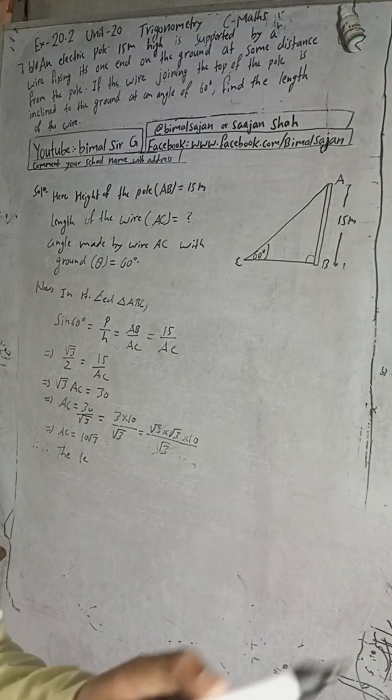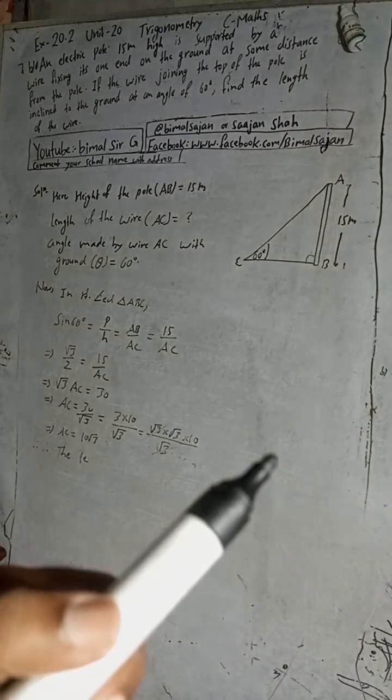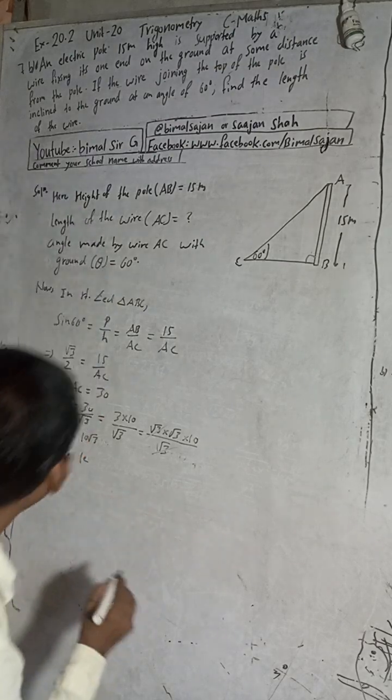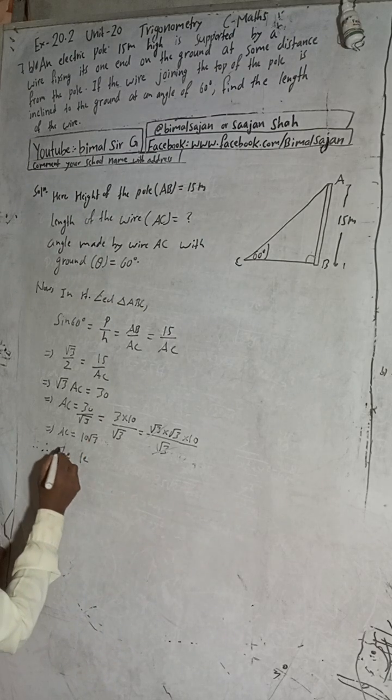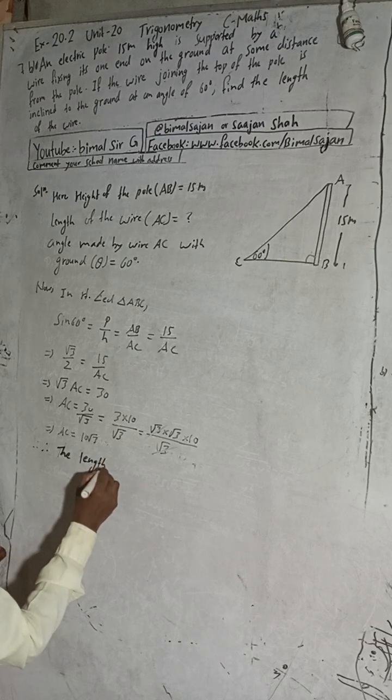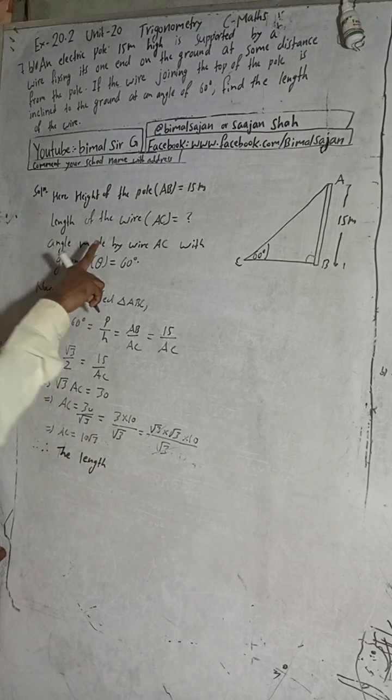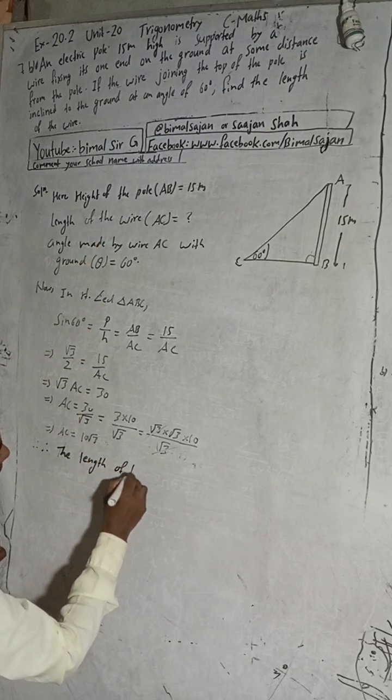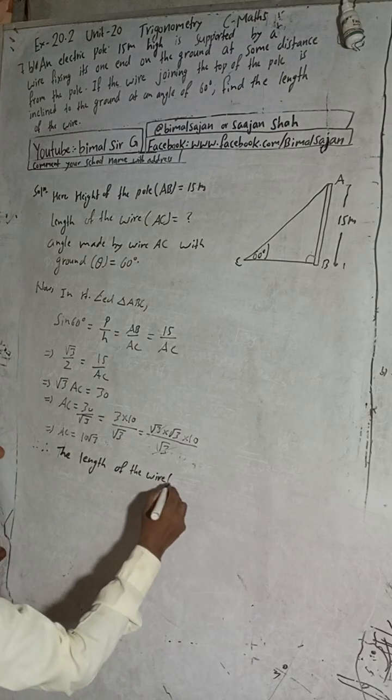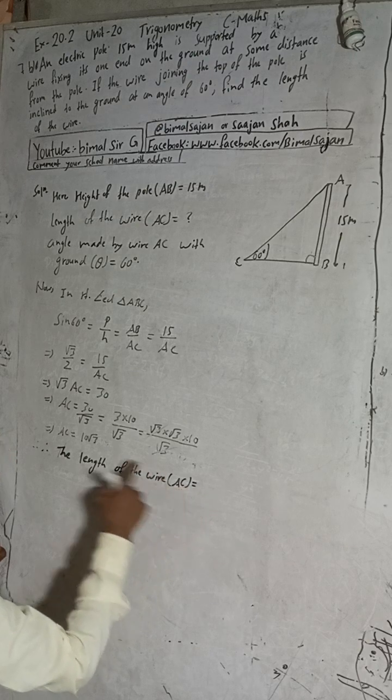Therefore, the length of the wire, that is the length of the wire is AC, so AC equals 10√3 meters.